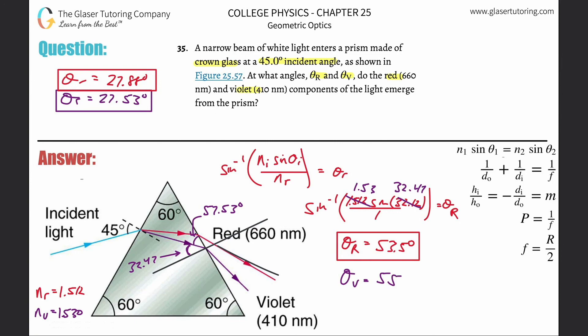So those are our answers: theta sub r is approximately 53.5 degrees and theta sub v is approximately 55.23 degrees, both measured relative to the normal at the exit surface. Just to clarify — the angle found is this larger angle referenced to the normal, not the small grazing angle. Thanks for watching, hope this helps!